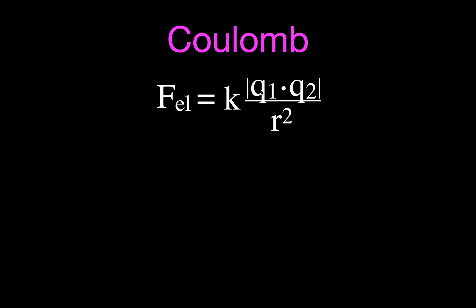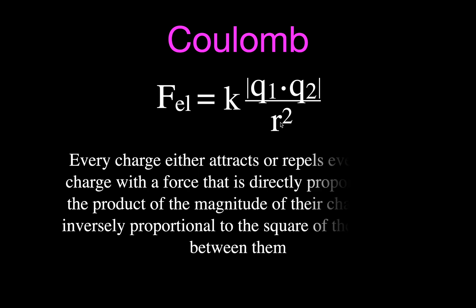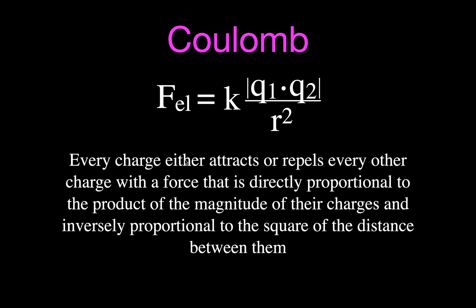We have the force with a constant, the two charges, and the square of the distance between them. Coulomb's law says that every charge either attracts or repels. This is one of the differences: for gravitation, there is always attraction, but for Coulomb's law, depending on whether the charges are similar or unlike, you can have attraction or repulsion.